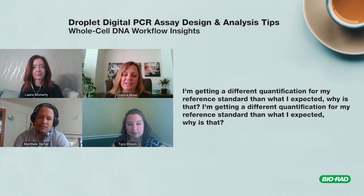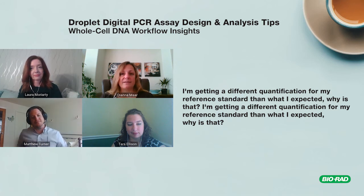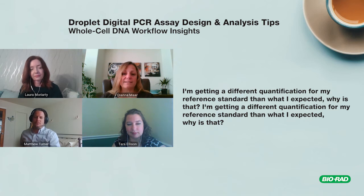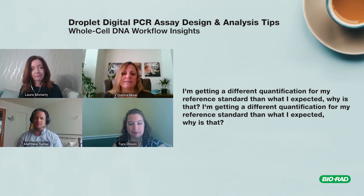Matt also noted: in developing an AAV protocol from start to finish, AAV genomes are partially single-stranded, which can change the way they look in a PCR reaction. A plasmid isn't always going to give you the same results as an AAV viral genome. If you absolutely must use a plasmid as a reference standard, realize it doesn't represent an AAV viral genome very well. RNA and DNA will also give very different quantities in different measurements.